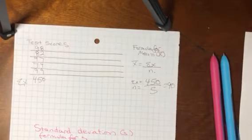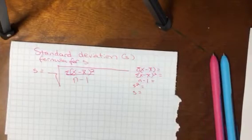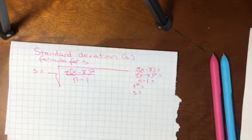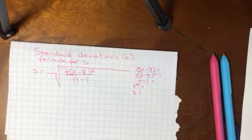Okay so our mean is 90 but now we want to know how good of an estimate is that 90 and so that's when we turn to our measure of variability or measure of dispersion, the standard deviation.